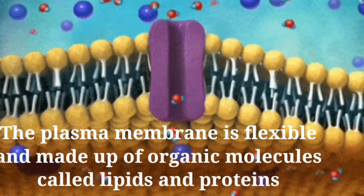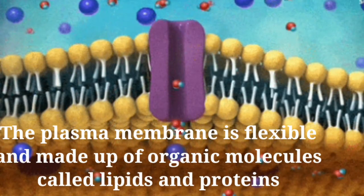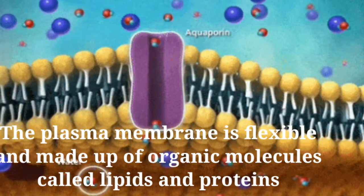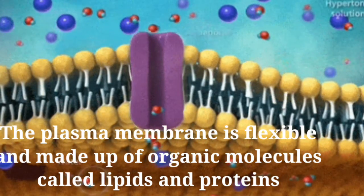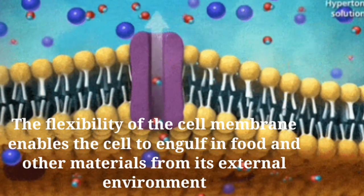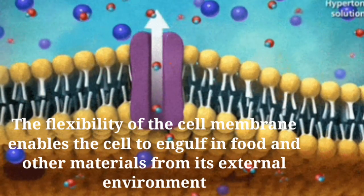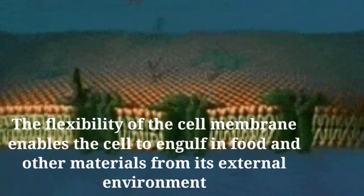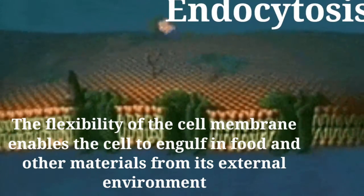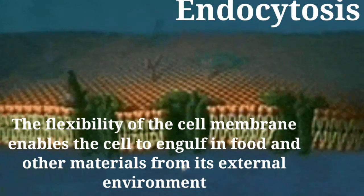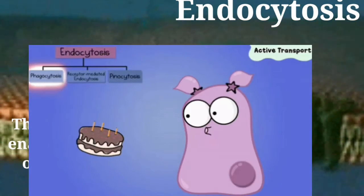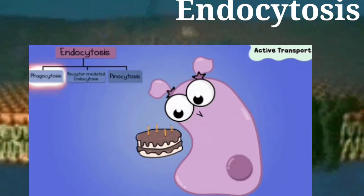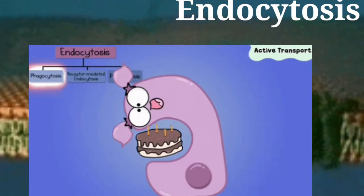The plasma membrane is flexible and is made up of organic molecules called lipids and proteins. The flexibility of the cell membrane also enables the cell to engulf food and other material from its external environment. Such a process is known as endocytosis, and it is clearly seen in lower organisms like amoeba.